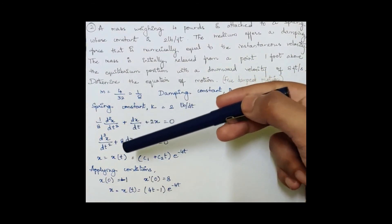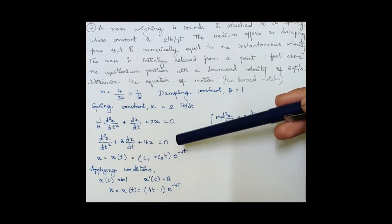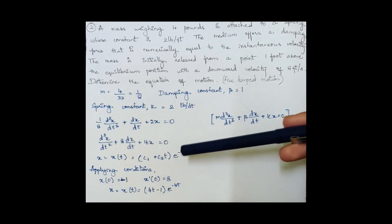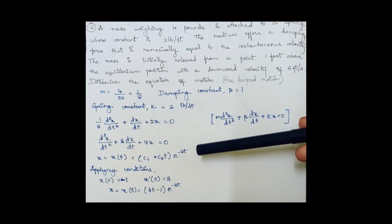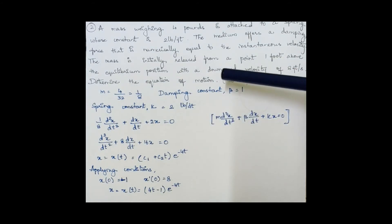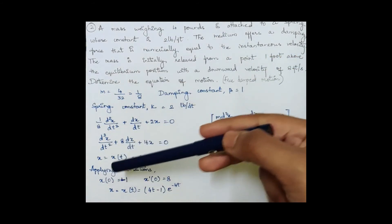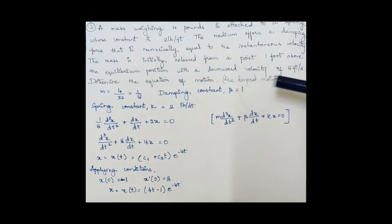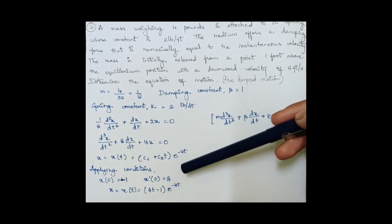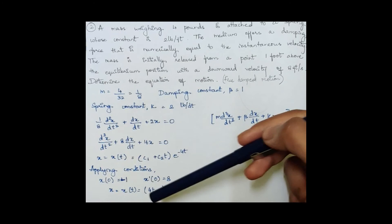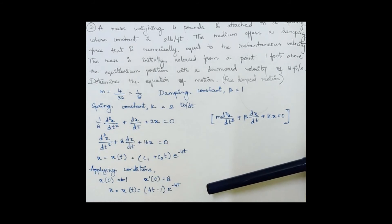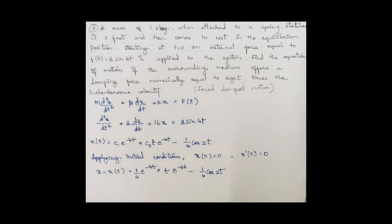Multiplying through by 8: d²x/dt² + 8·dx/dt + 16x = 0. Solving gives the complementary function: (c₁ + c₂t)·e^(−4t). Applying initial conditions — x(0) = −1 (one foot above equilibrium) and x′(0) = 8 (downward velocity) — and substituting, the equation of motion is x(t) = (4t − 1)·e^(−4t).